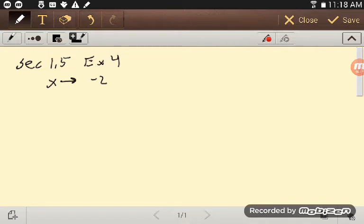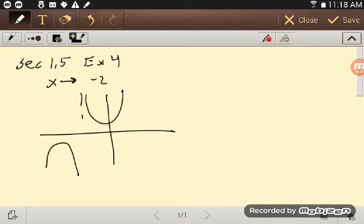And we have this graph of our function that looks something like this around negative 2. So there's our negative 2.